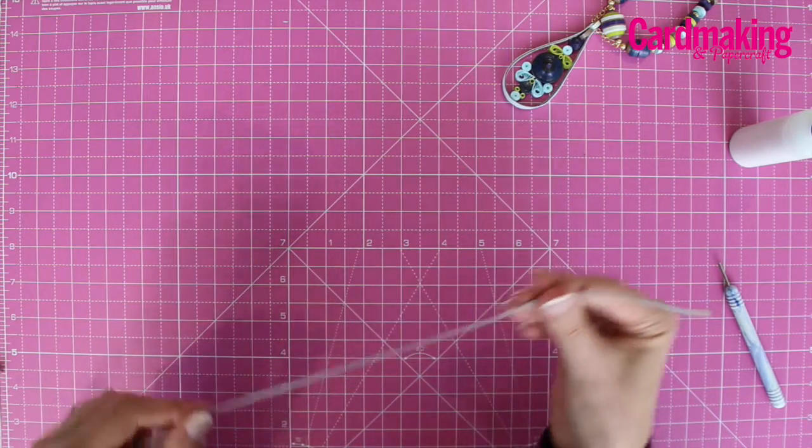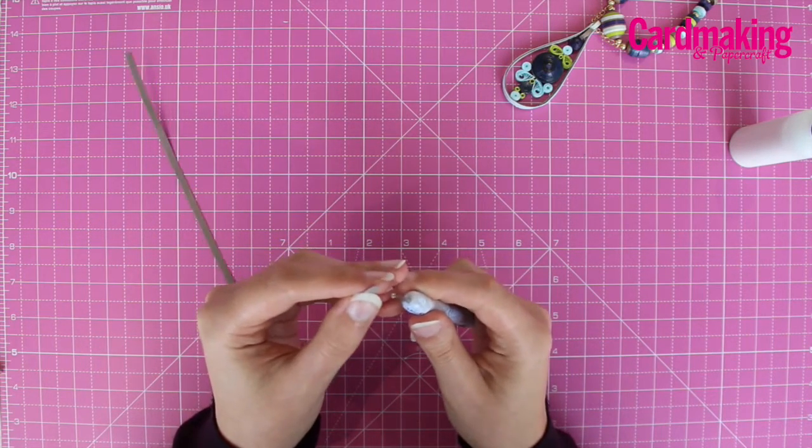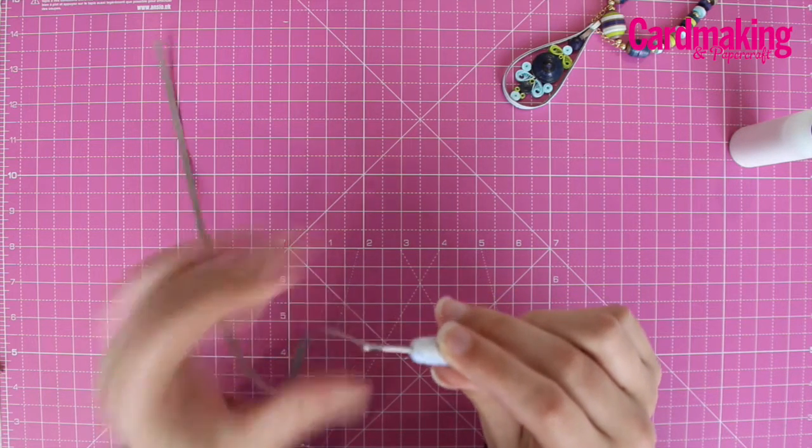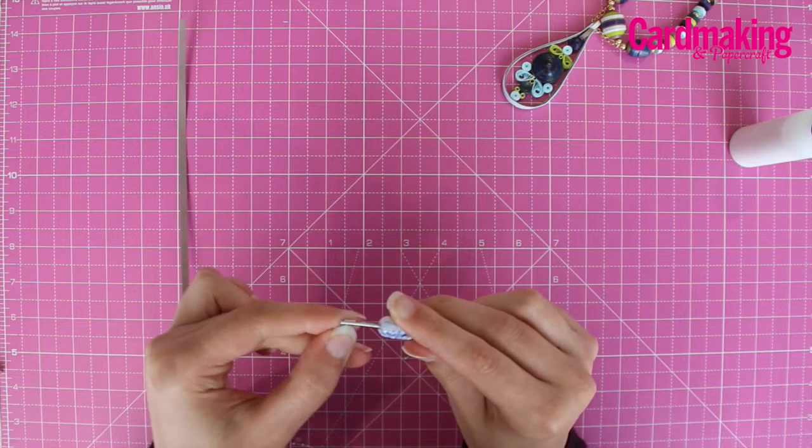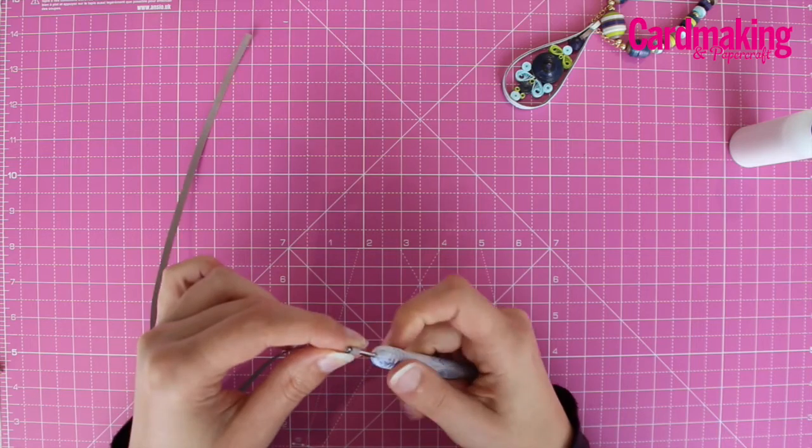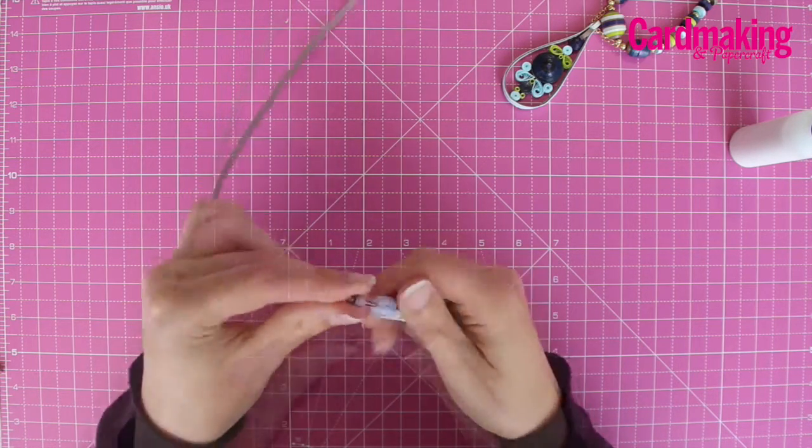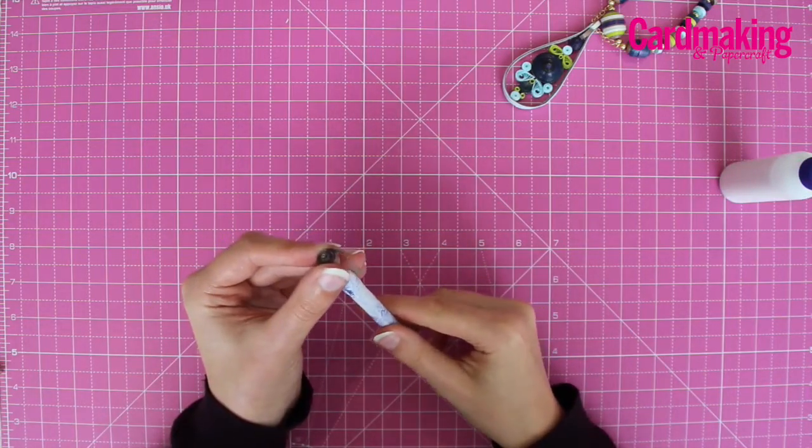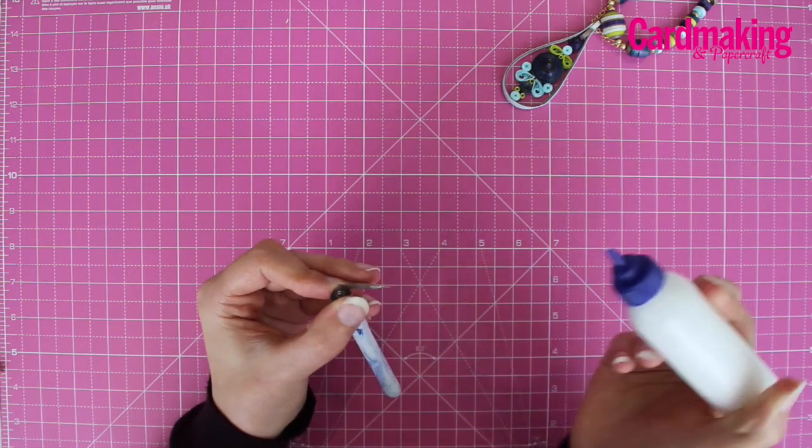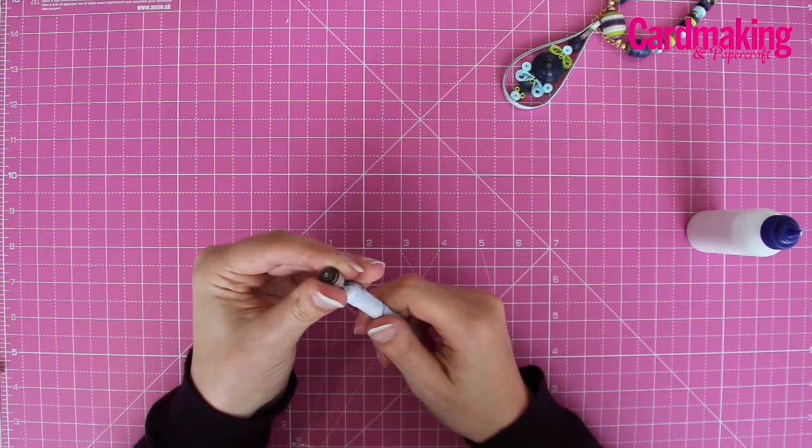Start with a 5mm brown quilling strip and use a quilling tool to coil it very tightly. Push it through the slot in the top and then wind it around the tool to create a tight coil. When you get to the end, use a very small dot of glue to attach the end and hold it in place to secure it.